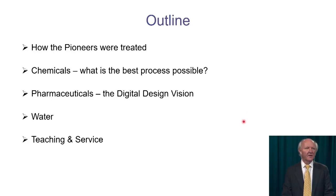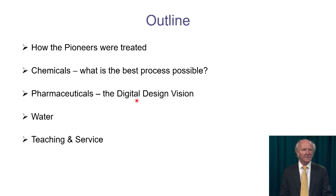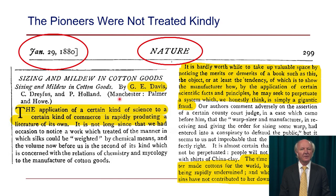Let me give a brief outline of what I want to talk about today. I want to have a little introduction on how the pioneers of our subject were treated — not very kindly, as it turns out. Then I want to talk about three things: chemical processes and how we can tell which is the best process; pharmaceuticals and medicines; and a few words about the new vision for digital design. I also have one slide on water and one on teaching and service.